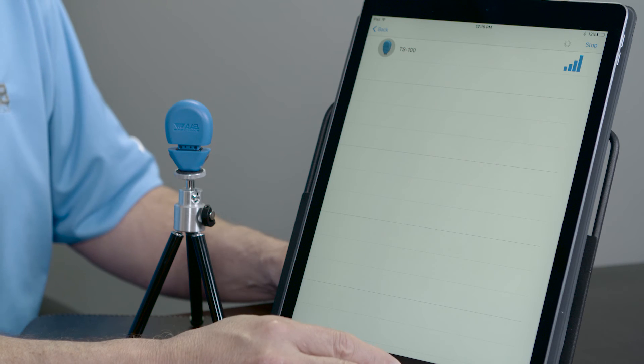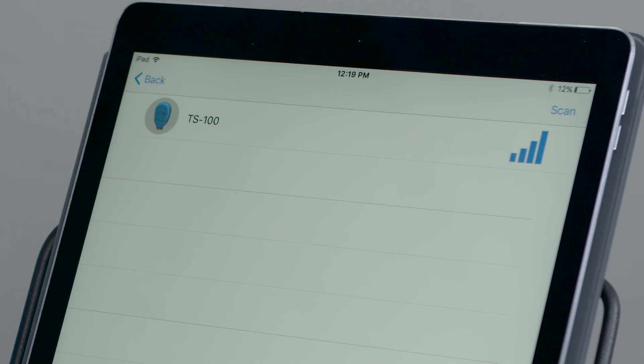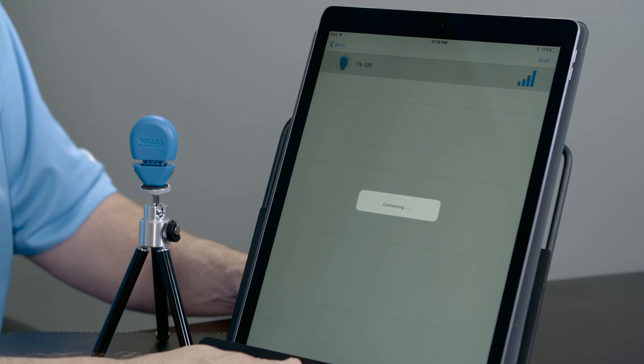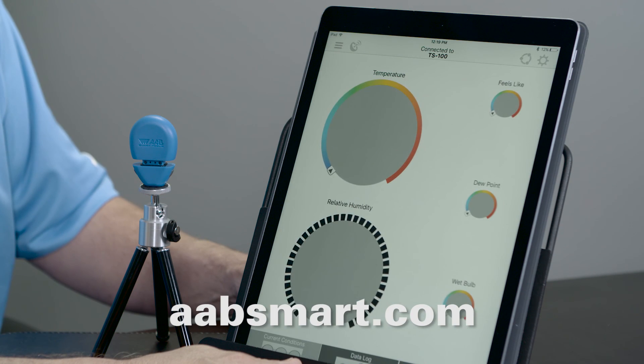Now it's going to go out and recognize that I have a TempSmart 100 out there that I'm allowed to connect to. Now that my smartphone Bluetooth enabled device has recognized the TempSmart 100, I'm ready to pair. Simply click on the icon and it will begin to connect.